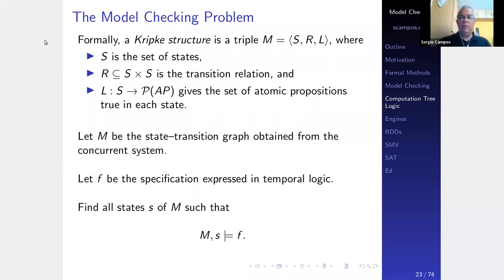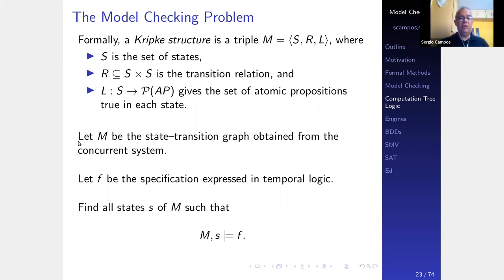Now we have our specification method. We use a Kripke structure — a state transition graph — which is a triple: S as a set of states, R as the transition relation mapping states to states, and a labeling function giving the set of atomic propositions true in each state. Given a Kripke structure M and a CTL formula F, the model checking problem is: find all states S such that M, S satisfies F.